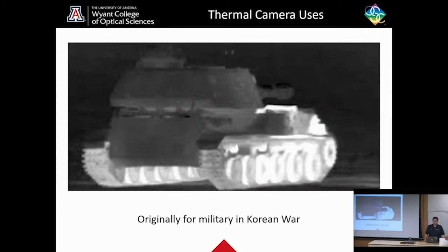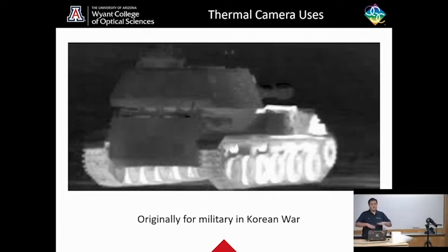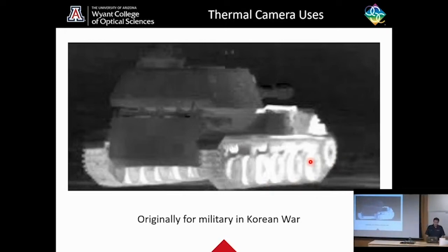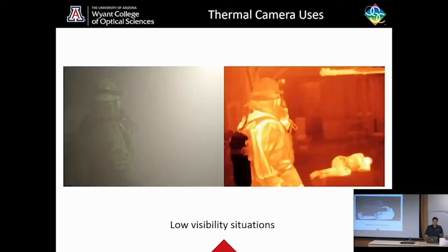So now I'm going to get into the uses of a thermal camera. Originally, thermal cameras were used in the Korean War. They were used to find tanks, people, things you don't want to step on, maybe landmines, because these all give off different temperatures than the area around them. Here in the tank, you can see that the wheels are brighter. That's because they're going to be hotter, so they're giving off more infrared radiation. So you can see them better with a camera.